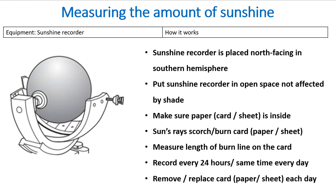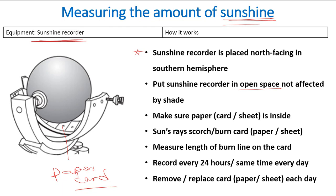Next is measuring sunshine. The instrument used is called a sunshine recorder. It is placed facing north in the southern hemisphere, in an open space not affected by shade. A paper card is inserted into the recorder. The sun's rays scorch or burn the paper card. You then measure the length of the burn on the card and record it every 24 hours at the same time each day. You remove and replace the paper card each day to measure sunshine intensity.